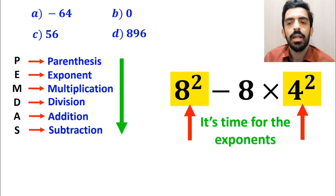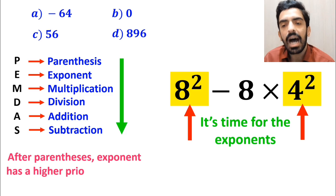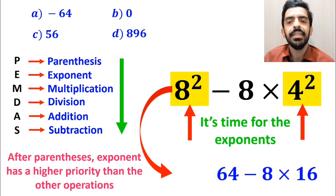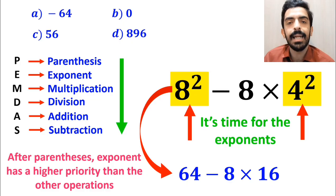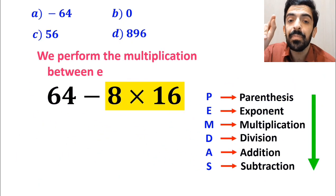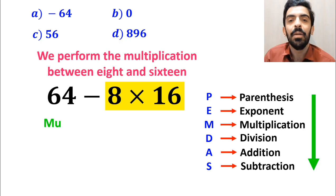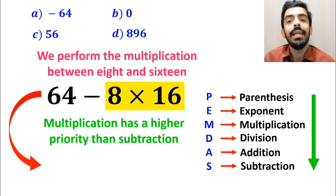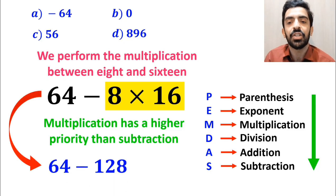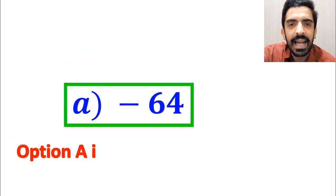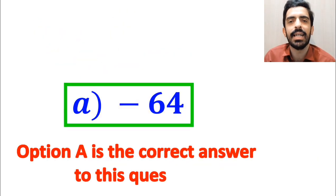Now it's time for the exponents, because after parenthesis, exponent has a higher priority than the other operations. So we write this expression as 64 minus 8 multiplied by 16. In the final step, we perform the multiplication between 8 and 16, because multiplication has a higher priority than subtraction. This expression becomes 64 minus 128, which finally gives us the answer negative 64. Therefore, option A is the correct answer to this question.